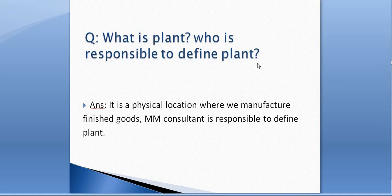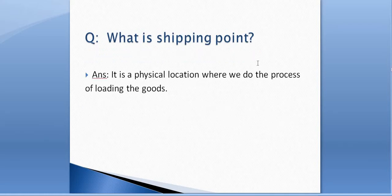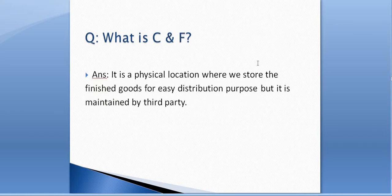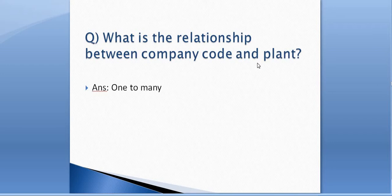What is a plant, and who is responsible to define plant? A plant is a physical location where we manufacture goods, and the MM consultant is responsible to define plant. What is a shipping point? A shipping point is a physical location where we do the process of loading the goods. What is a depot? A depot is a physical location where we store finished goods for easy distribution. What is CNF? CNF means Carry and Forward — it is also a physical location where we store finished goods for easy distribution, but it is maintained by a third party.